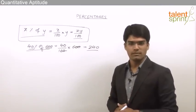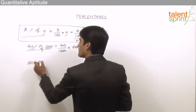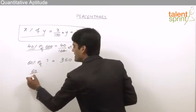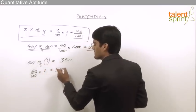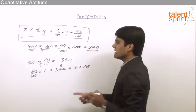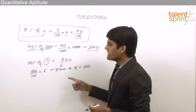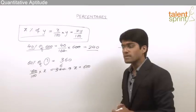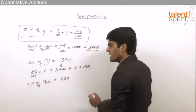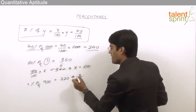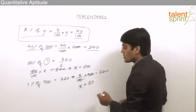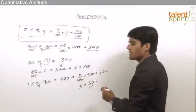For example: 60 percent of what equals 360? Let 60 upon 100 into x equal 360. Solving, x equals 600. So 60 percent of 600 is 360 — here the percentage value and absolute value were given and we found the maximum value. Another example: what percent of 900 equals 720? Let x by 100 into 900 equal 720, so x equals 720 by 9 which is 80. So 80 percent of 900 is 720.